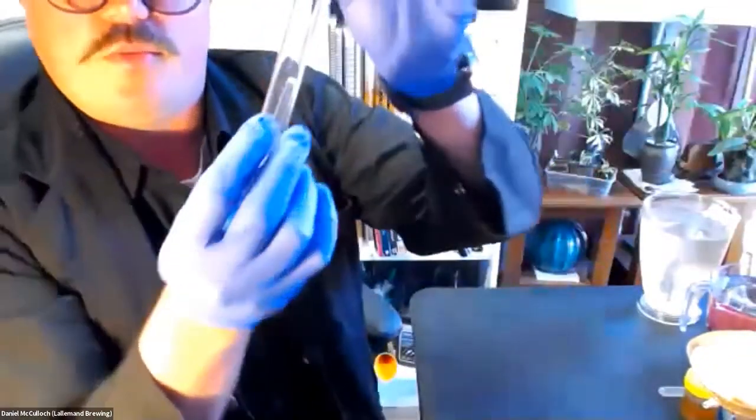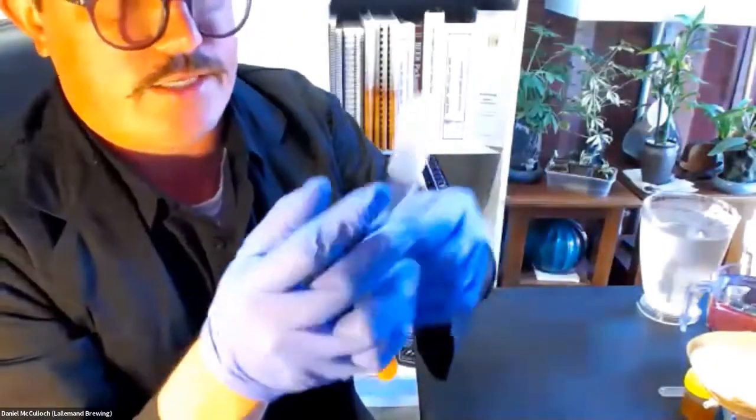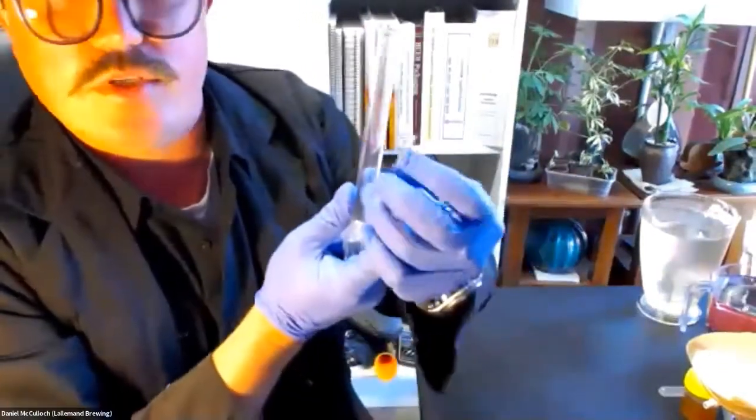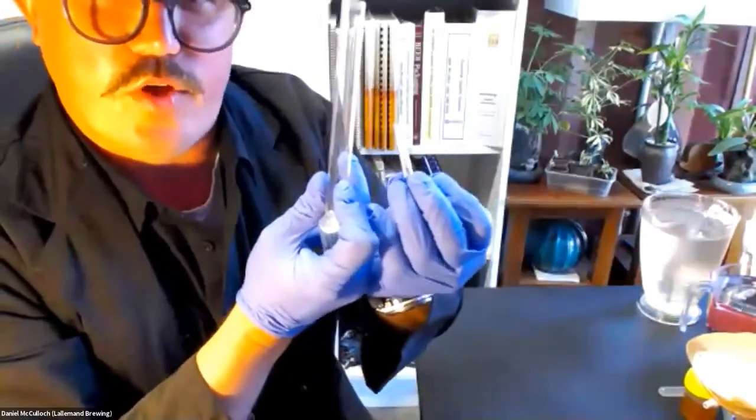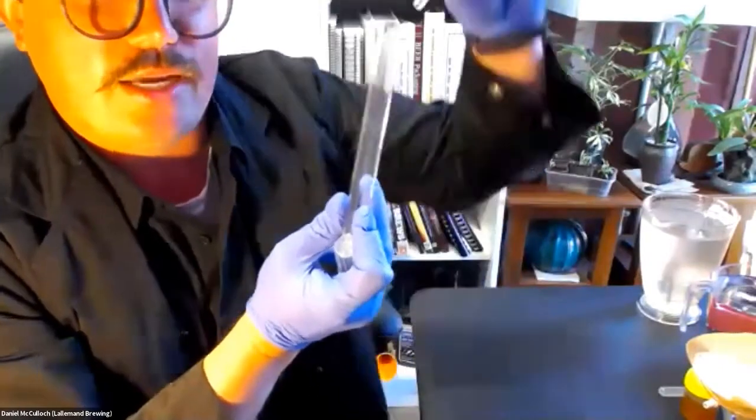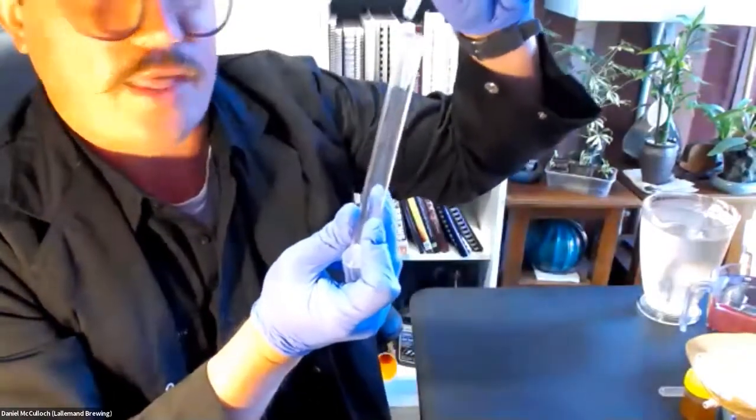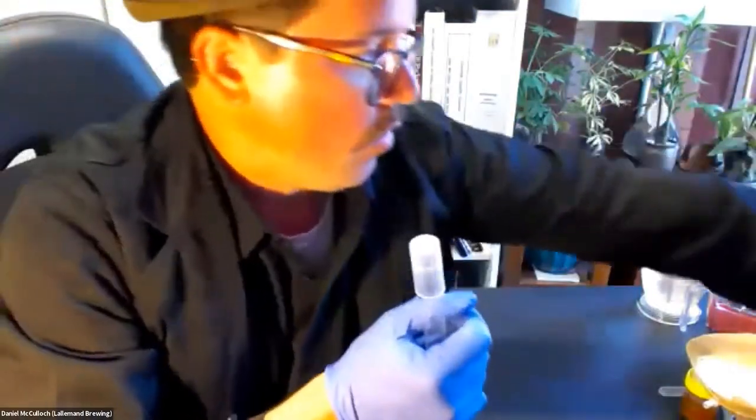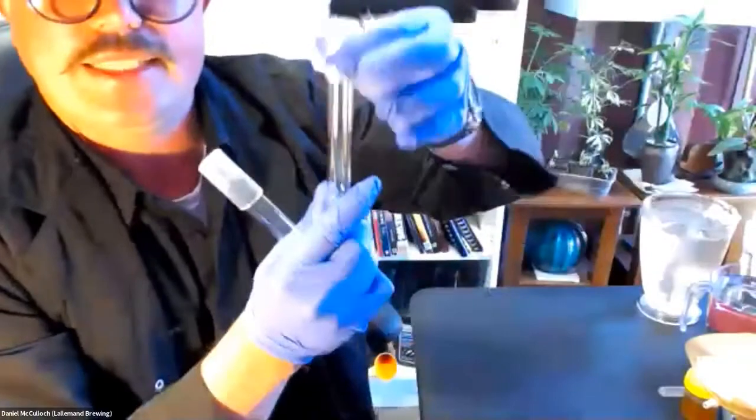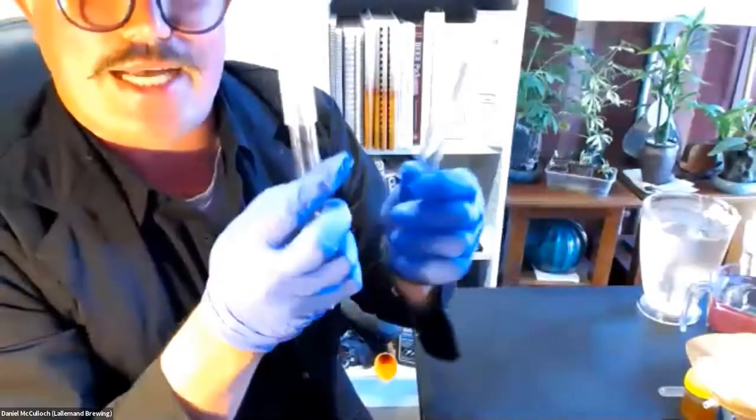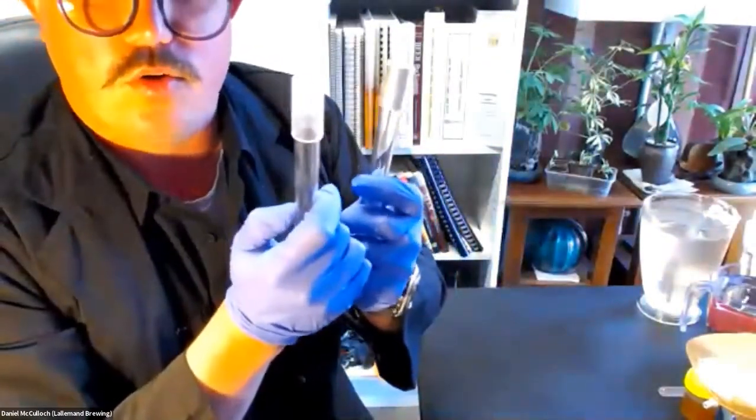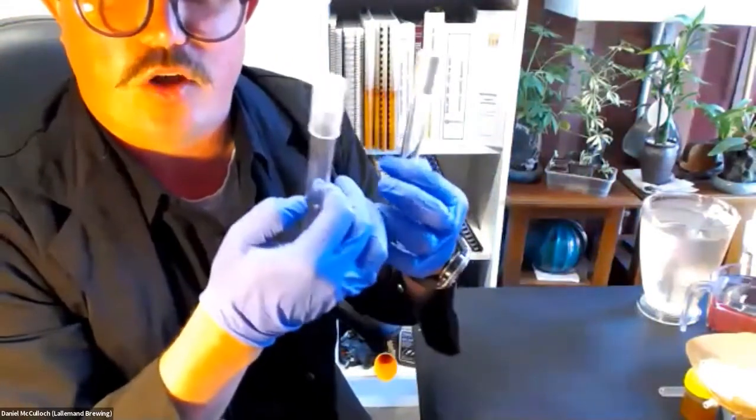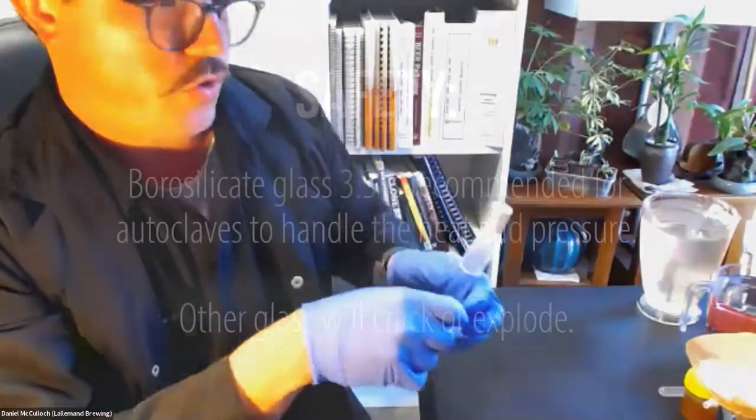The next step for the Durham test is to have a test tube and a Durham tube. So you have a test tube, the Durham tube is just like a smaller version of a test tube. And that goes in the opposite way, because you want the gas to be captured in that. And then you'll have a cap, whether it's plastic or something like a metal cap. And because we're going to put this glass into a pressure cooker or autoclave, you want to ensure that it's borosilicate glass, so it's not going to explode in the pressure cooker.